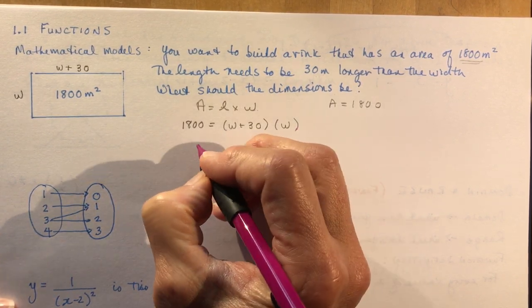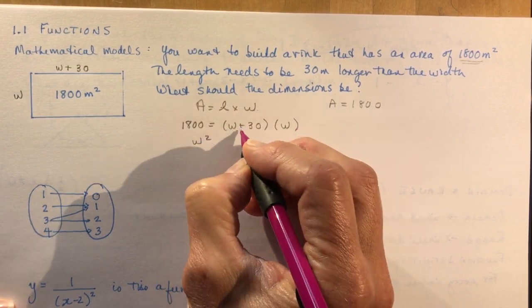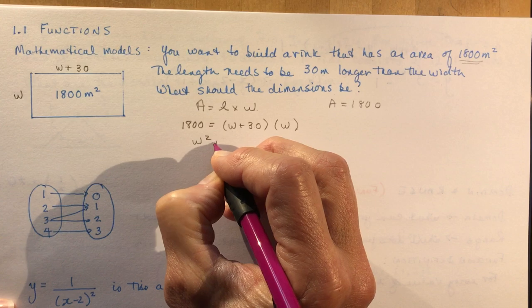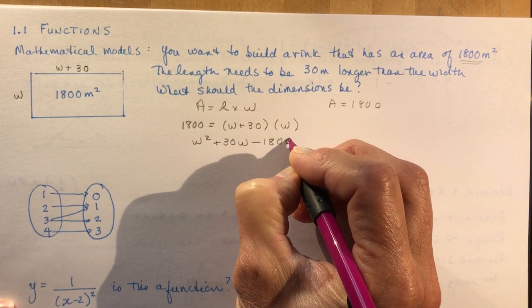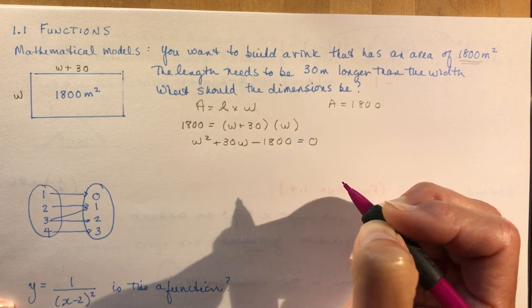All you have to do now is expand, simplify, and solve for w. So let's do that. We have w squared plus 30w, then I'm going to subtract 1800 so I can get it all on one side. Set that equal to zero.